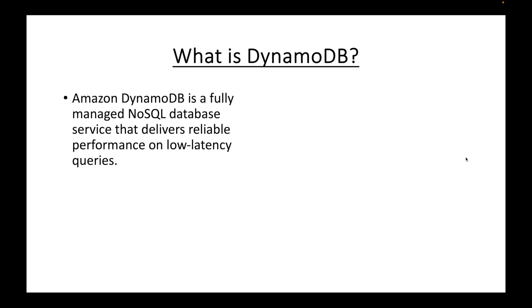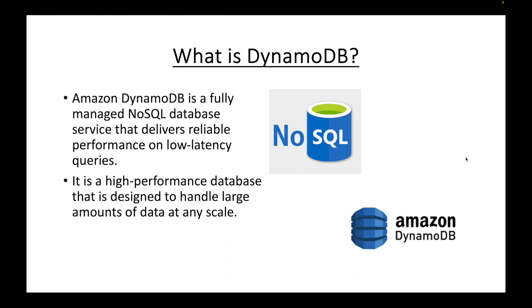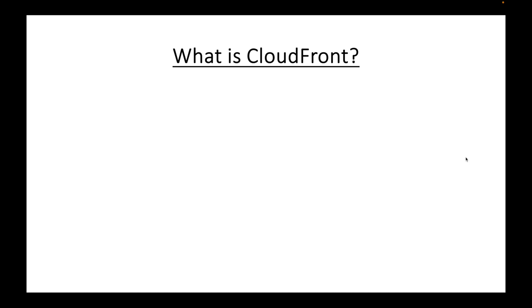The next question is: what is DynamoDB? DynamoDB is one of the NoSQL databases we have in AWS. When talking about databases, we have SQL and NoSQL types. In AWS, when it comes to NoSQL, DynamoDB is the service to use. Amazon DynamoDB is a fully managed NoSQL database service that delivers reliable performance on low latency queries. It is a high-performing database designed to handle large amounts of data at any scale.